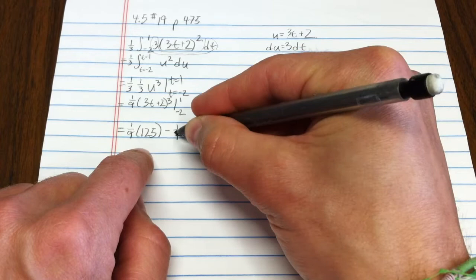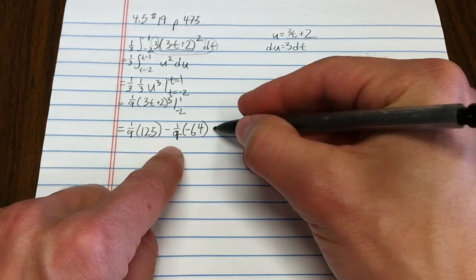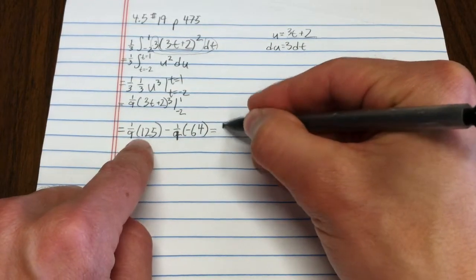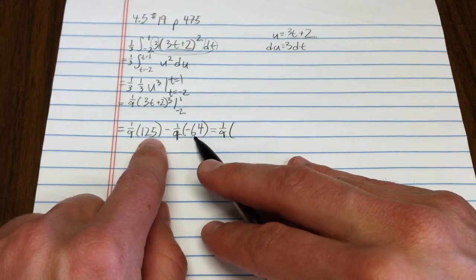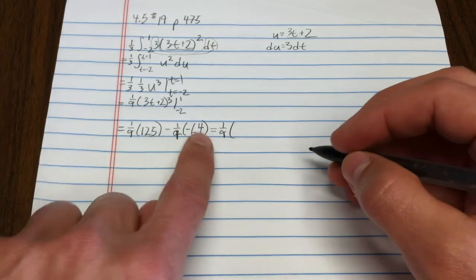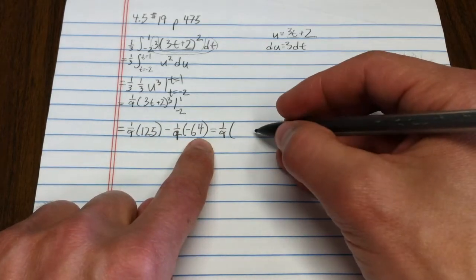I have no idea how that became a 2, that's a 9, right? So, I could factor out the 1 ninth. We could do a little bit of fun subtraction inside. So, 125 minus 60.